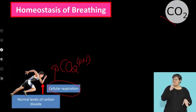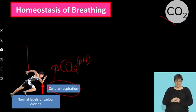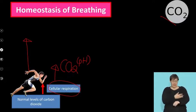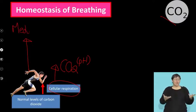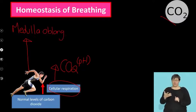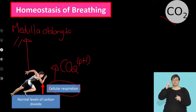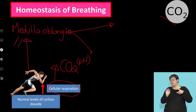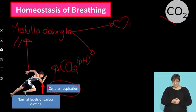So what does my body do? When these high carbon dioxide levels are in my blood, blood rushes through the brain — specifically an area called the medulla oblongata. It's the brain stem, the very bottom part of my brain. The medulla oblongata then sends two messages via nerves to two organs that it's going to trigger.